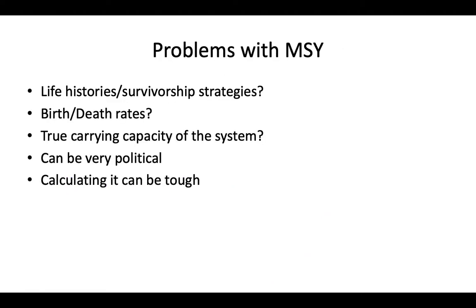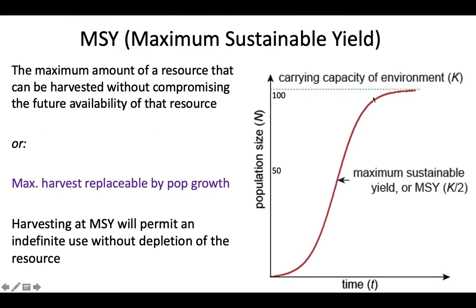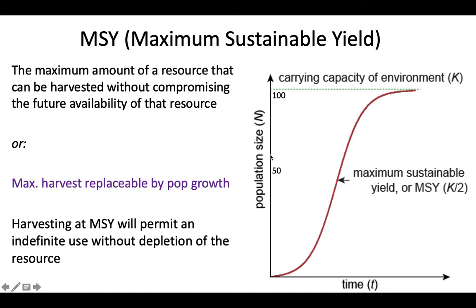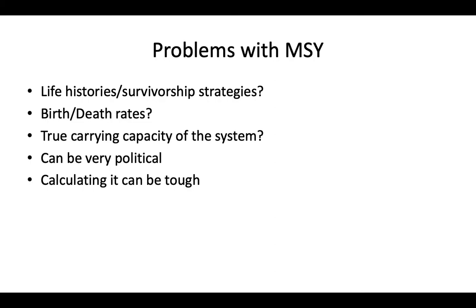There are a lot of issues with this idea, though. If you consider life history strategies and survivorship curves, it's not going to be the same for every species. You also want to consider birth and death rates — can we even calculate the carrying capacity of an ecosystem? This idea of maximum sustainable yield can be rather political sometimes, and it's almost impossible to calculate. It's going to be different in every scenario. So in theory it's a great idea that should guide how we view our use of resources, but it's hard to actually implement. And that's true for a lot of theories, especially in ecology and environmental science.